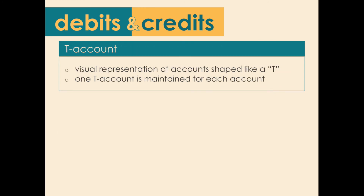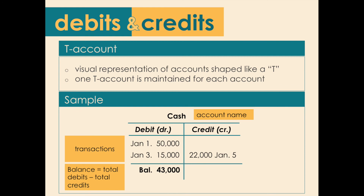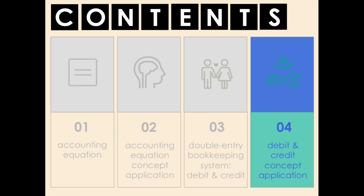When analyzing accounts, we often use a tool called the T-account — a visual representation shaped like the letter T. One T-account is maintained separately for each account. The account name is placed on top; the left side is labeled as debit (Dr) and the right side as credit (Cr). Transactions are listed in the space and at the end of the period the balance is computed by getting the difference of all debits and credits. The balance is placed on the side which exceeds the other.